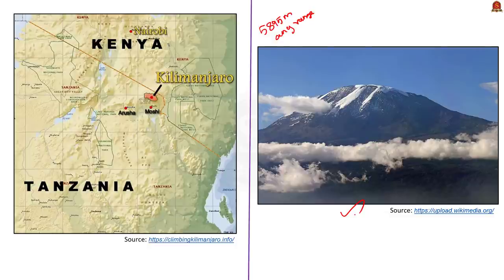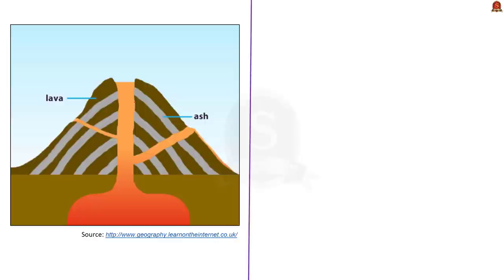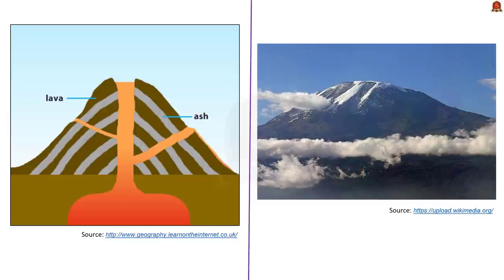The second statement: Mount Kilimanjaro is a stratovolcano. This statement is also true. Stratovolcanoes are conical tall volcanoes formed by highly acidic, very viscous lava called andesitic lava. Since the lava is highly viscous, it does not flow for a long distance, thus forming a characteristic conical shape. Other examples of stratovolcanoes are Mount Stromboli, Mount Vesuvius, and Mount Fuji. After today's discussion, take your atlas and try to locate these volcanoes.